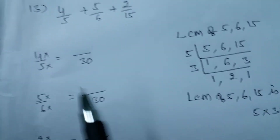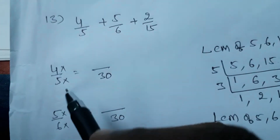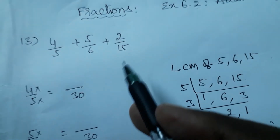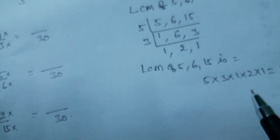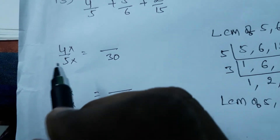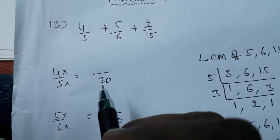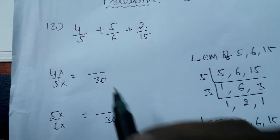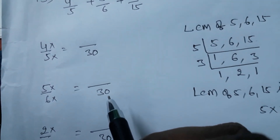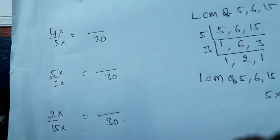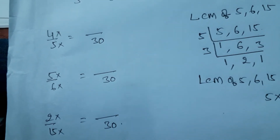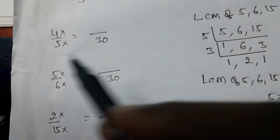The LCM is 30. Now take each fraction individually: 4/5, 5/6, and 2/15. We need to write equal fractions for each such that the denominator is 30 in all cases. This is how we convert unlike fractions into like fractions — by making all denominators equal to the LCM.